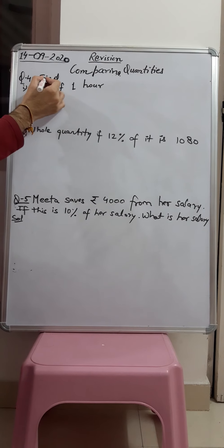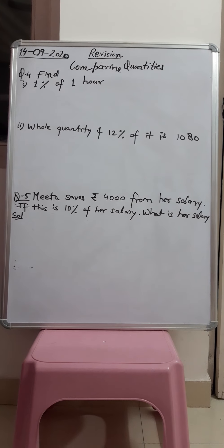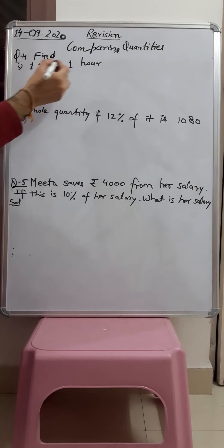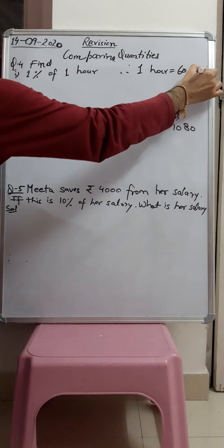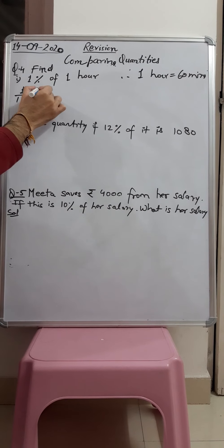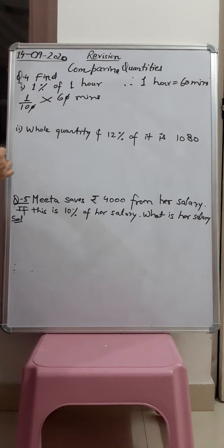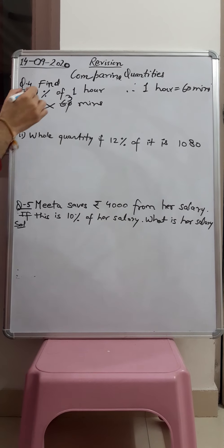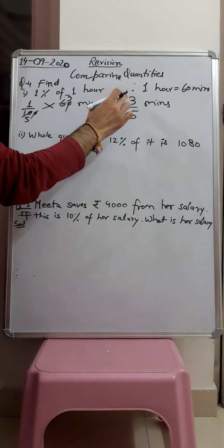Question number 4, first part: find 1 percent of 1 hour. The unit is hours, so we change to smaller units — 1 hour equals 60 minutes. So we find 1 percent of 60 minutes: 1 upon 100 multiplied by 60. Cancelling zeros, we use the table of 2: 2 threes and 2 fives, giving 3 upon 5 minutes. So 1 percent of 1 hour equals 3 upon 5 minutes.